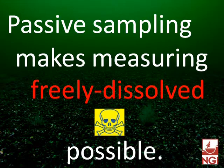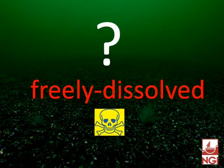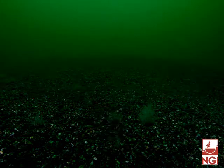Passive sampling is designed to measure the freely dissolved concentration of water contaminants. To understand what that means, let's look at how contaminants spread in the water. Imagine that you're somewhere below the surface of the water and there's been a contamination spill.